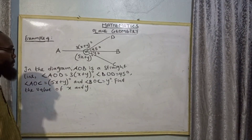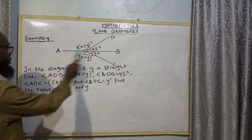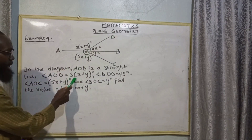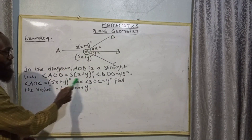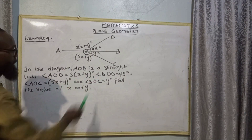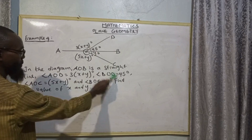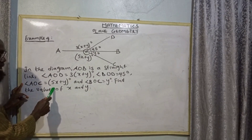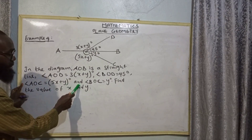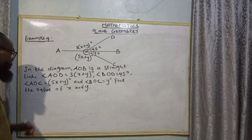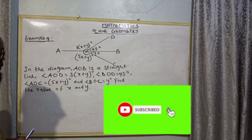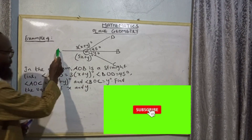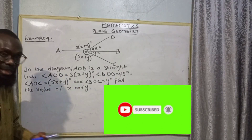In the diagram, AOB is a straight line. Angle AOD = 3(x + y) degrees. Angle BOD = 45 degrees. Angle AOC = 5x + y degrees. And angle BOC = y degrees. Find the value of X and Y.